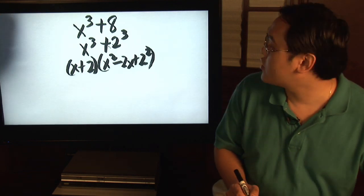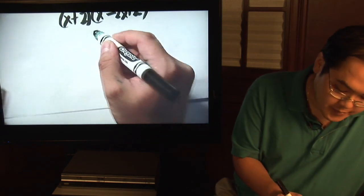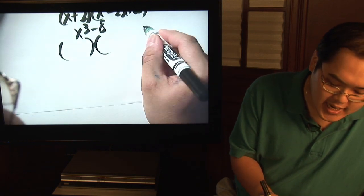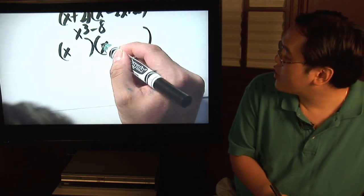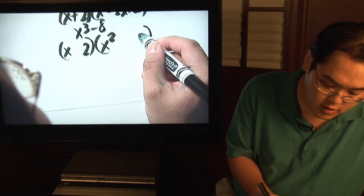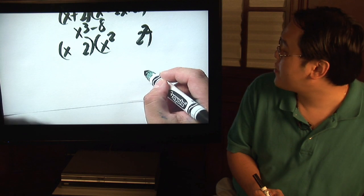Now if I wanted to factor x cubed minus eight, same exact idea. The x would go here, x squared will go here. We know eight is two cubed. Two goes here, two squared goes up there.